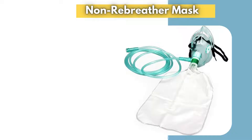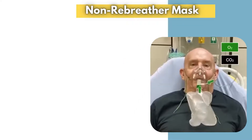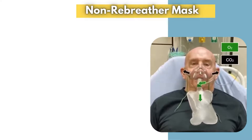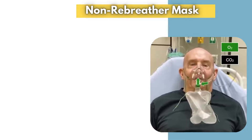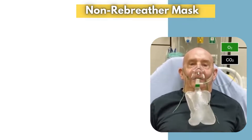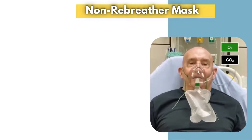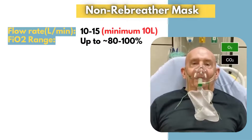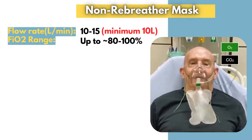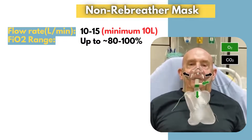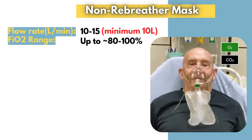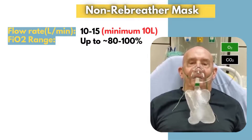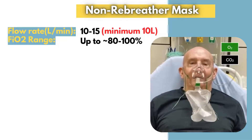The non-rebreather mask is a high-concentration oxygen delivery device consisting of a face mask attached to a reservoir bag filled with nearly 100 percent oxygen. It features two one-way valves — one over the reservoir bag and another over the exhalation ports. These valves allow carbon dioxide to escape while preventing room air from entering during inhalation, ensuring that the patient receives a high fraction of inspired oxygen. The flow rate ranges from 10 to 15 liters per minute, delivering an oxygen concentration of approximately 80 to 100 percent. The minimum required flow rate is 10 liters per minute to keep the reservoir bag inflated and ensure adequate oxygen delivery.